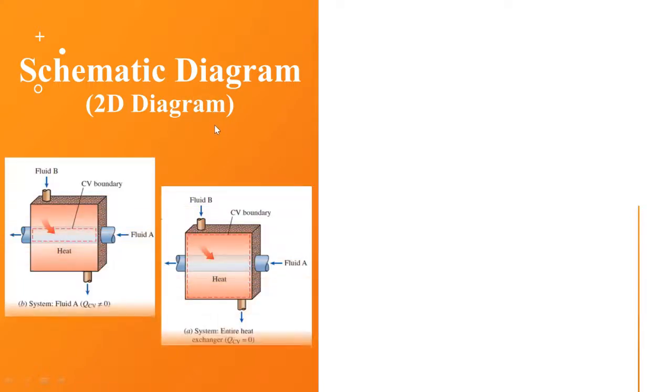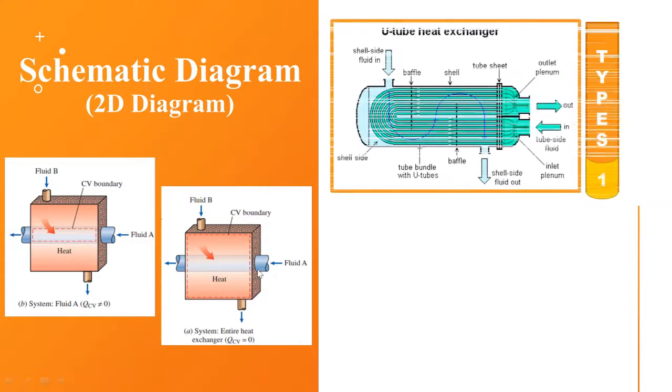Let's move on to the schematic diagram of heat exchanger. From this diagram, we can see that when the CV boundary, the control volume boundary, is chosen at one of the fluids here, as in fluid A, we can say that the heat transfer is not equal to zero. Or for this diagram, when the CV boundary is chosen at the entire system, we can say that the heat transfer is equal to zero.